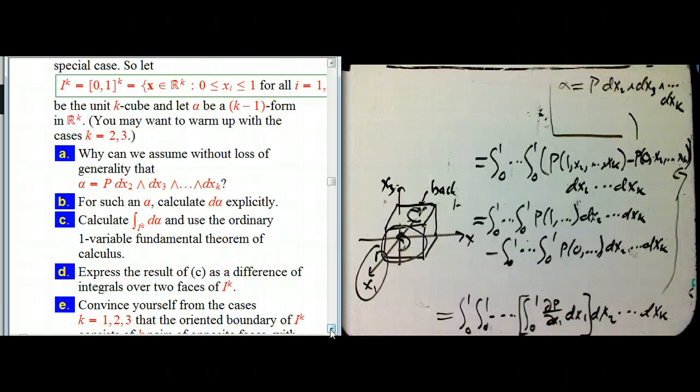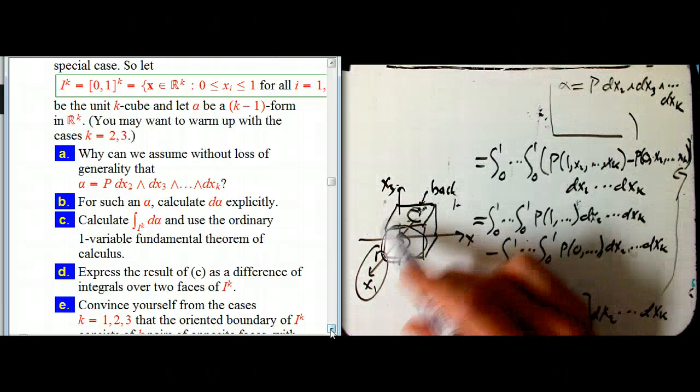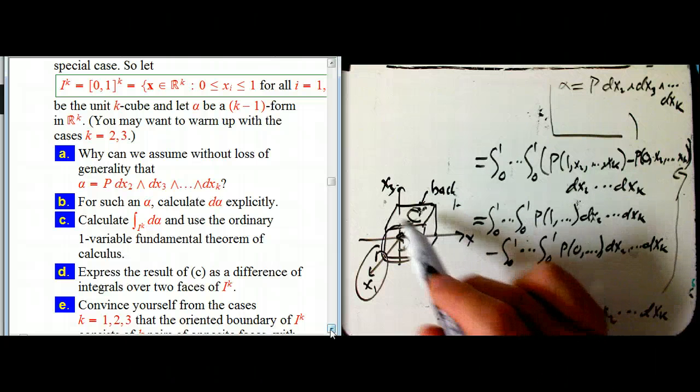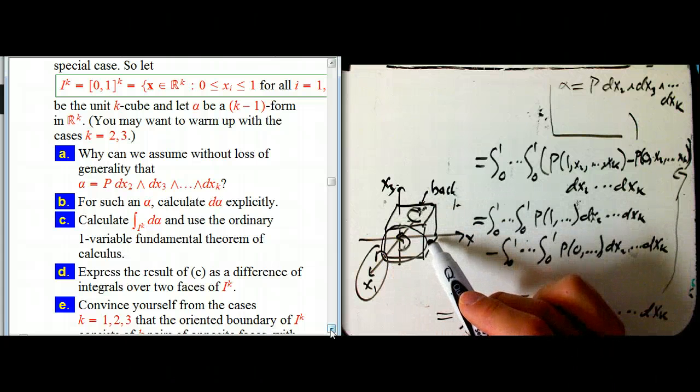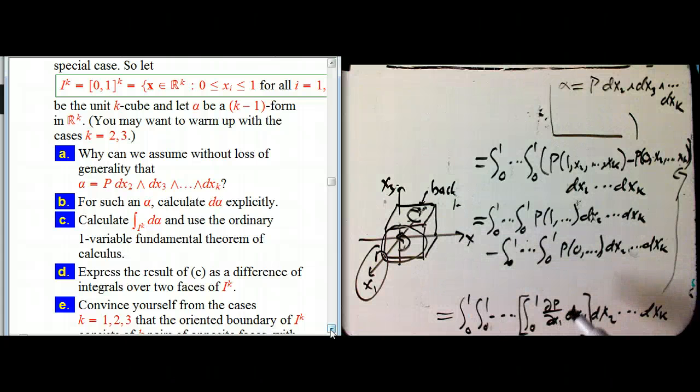That's exactly what you're supposed to do to consider these two faces as opposite faces of the cube. Now there's something maybe a little bit weird. What about the other? There's many, many other faces to the boundary of this unit cube in general. There's four other faces in three dimensions. There's going to be many, many other faces in other dimensions.